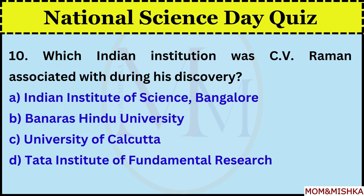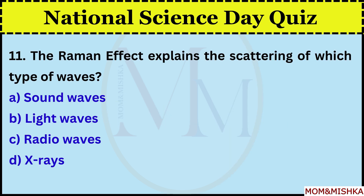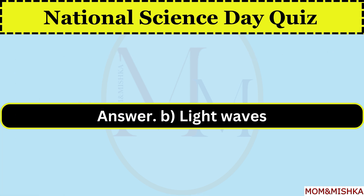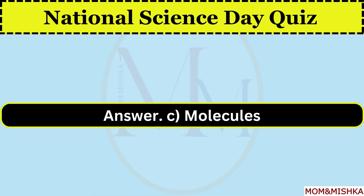Which Indian institution was C.V. Raman associated with during his discovery? The University of Calcutta. The Raman Effect explains the scattering of which type of waves? Light waves. The Raman Effect occurs due to the interaction of light with which particles? Molecules.